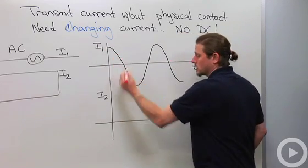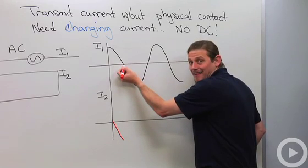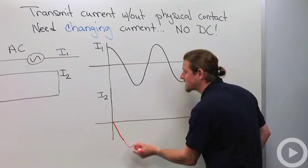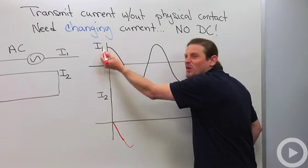Let's see. Decreases, so it's negative. So it's going to go down like that. Here it's increasing at the maximum rate. So that means that it's going to be maximum current in the second loop right here when this current is zero.